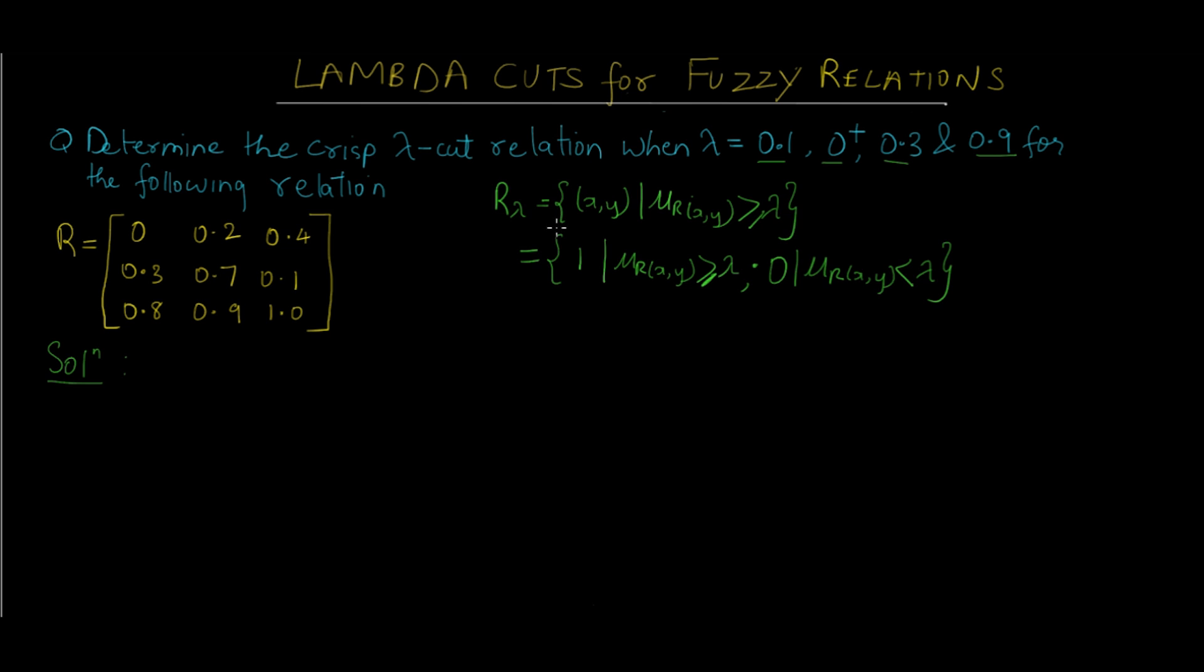Basically what we have to do is compare all these values with the lambda value. Wherever the actual value is greater than or equal to the lambda value, we replace it with 1. If the actual value is smaller than the lambda value, we replace it with 0. Let me show you what I just said for the first case, λ=0.1.